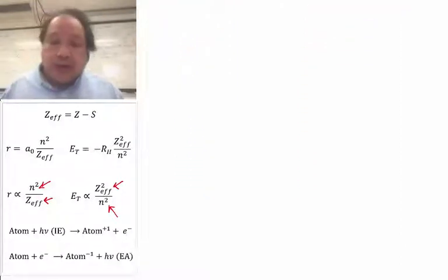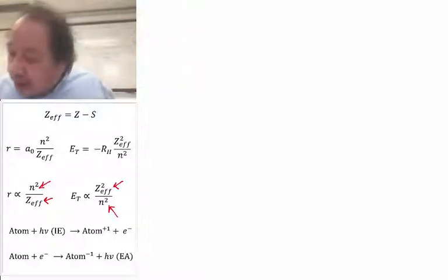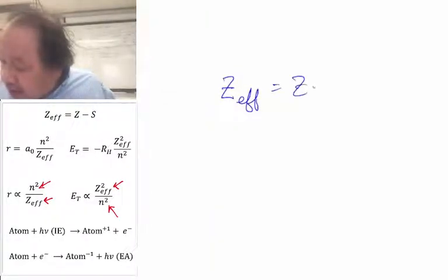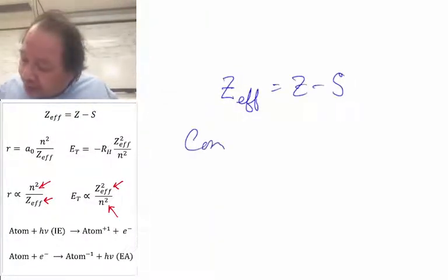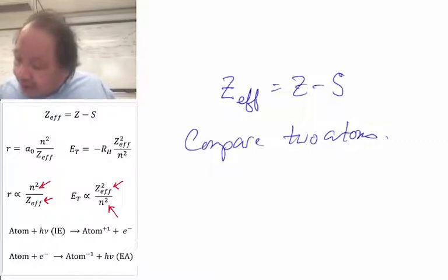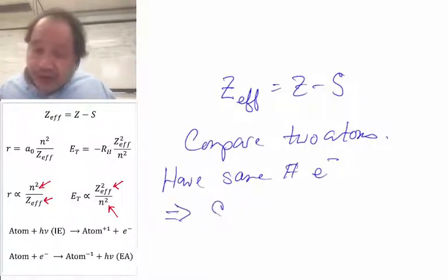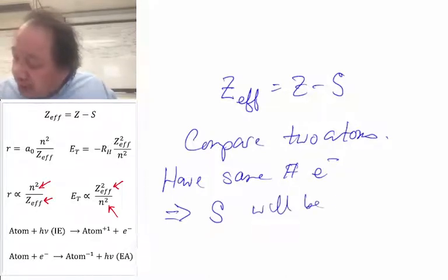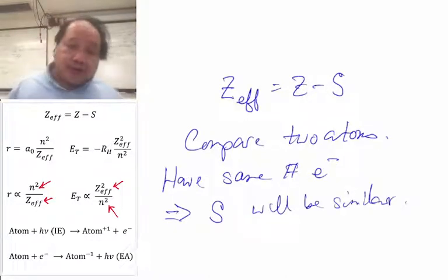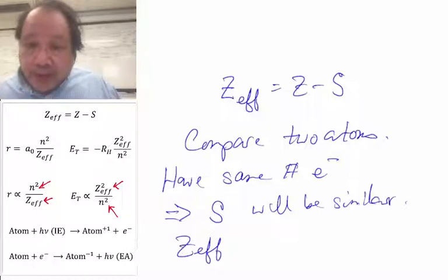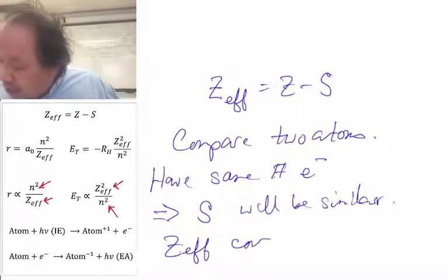And the last important idea that we need as we go to general problems comes from the first equation, Z_eff equals Z minus S. Let's compare two atoms. If the two atoms have the same number of electrons, then shielding will be similar. Shielding is caused by electrons shielding others. If the same number is around, the same amount of shielding, and that means Z_eff is no longer controlled by S. Z_eff is controlled by Z.